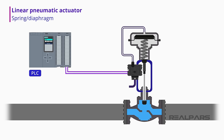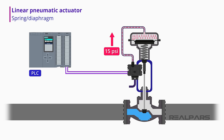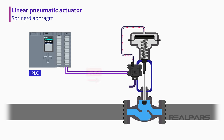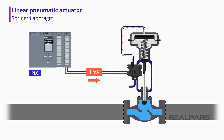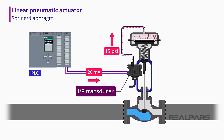Let's look at a typical spring diaphragm pneumatic actuator connected to a flow control valve in action. A typical pneumatic actuator will stroke a complete 0 to 100 percent over a pneumatic pressure input range of 3 to 15 psi. The PLC analog output card produces a 4 to 20 milliamp current to move the valve from fully open to fully closed. A signal conditioner called a current to pressure transducer, or I to P, will change the 4 to 20 milliamps into 3 to 15 psi.